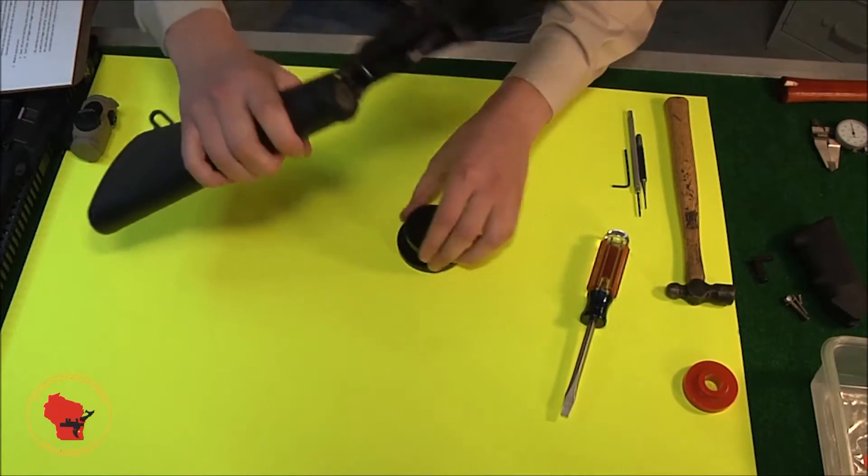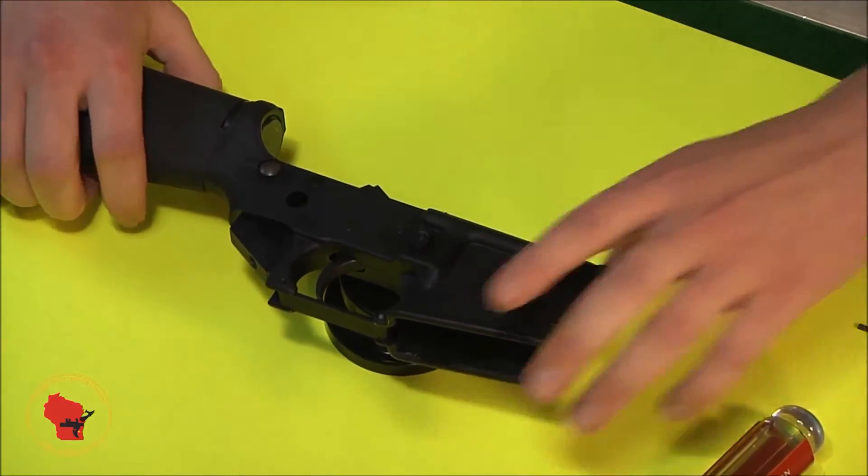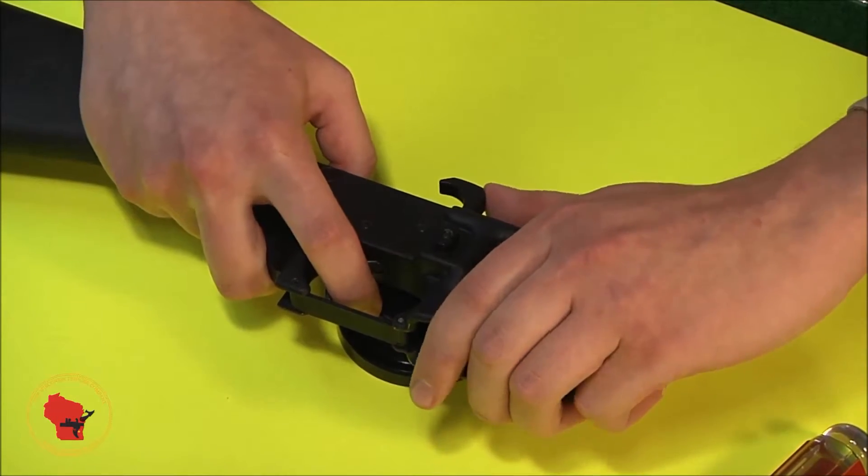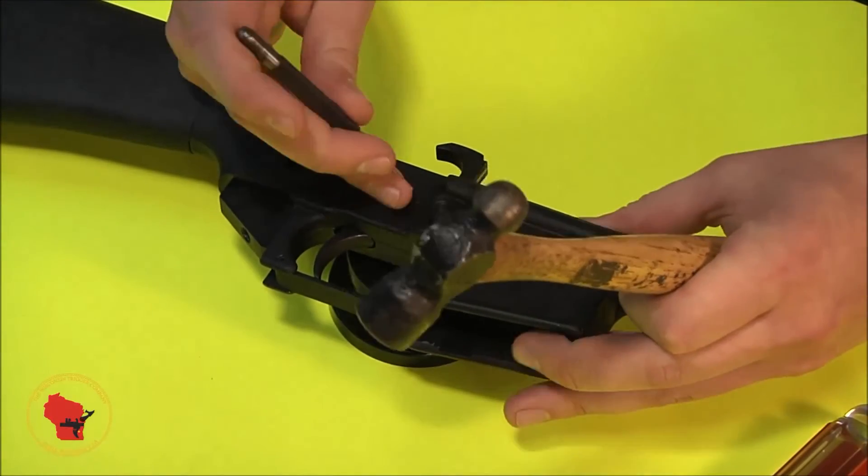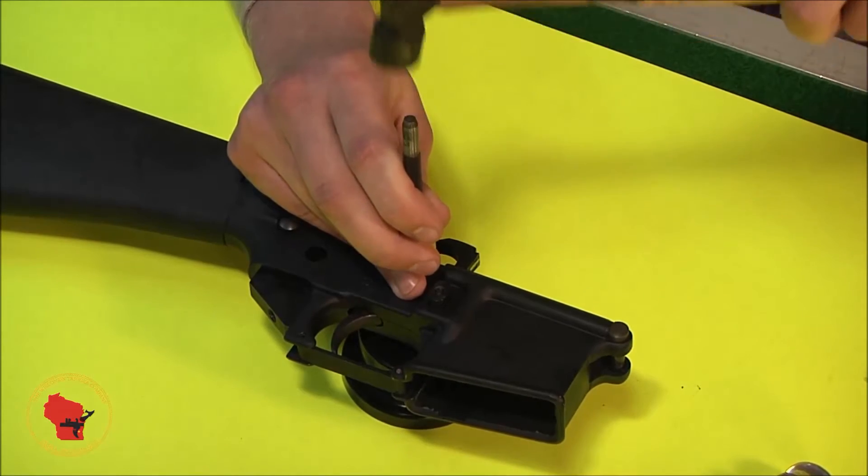Now you're gonna want to grab your disassembly puck, and we're going to begin driving the pins out starting with the hammer. De-cock it first so it doesn't fly out of there and hurt you. Take the punch and the small hammer, and carefully tap them out.